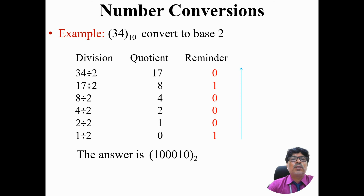Reading the remainders from bottom to top: 1, 0, 0, 0, 1, 0. So the equivalent of 34 in base 10 can be represented in binary as 100010.